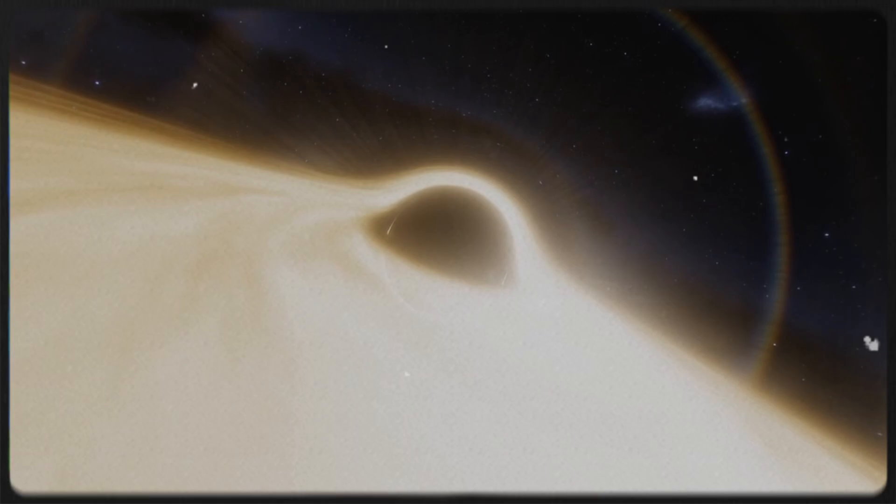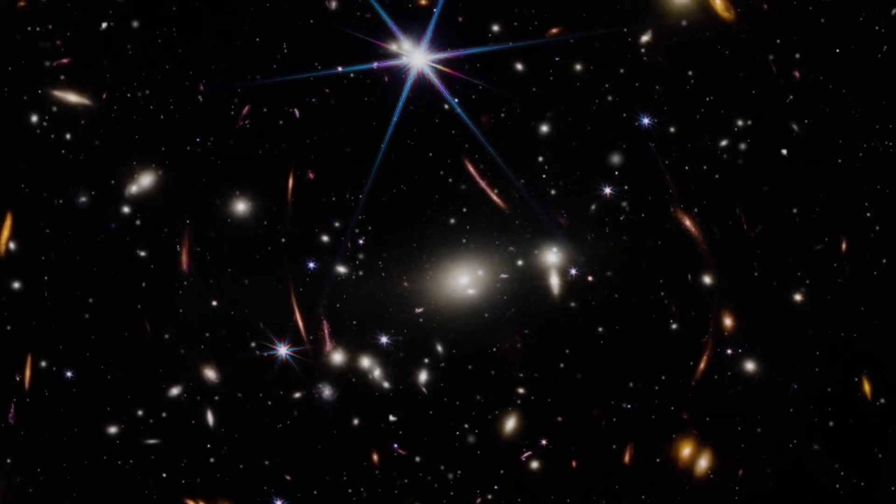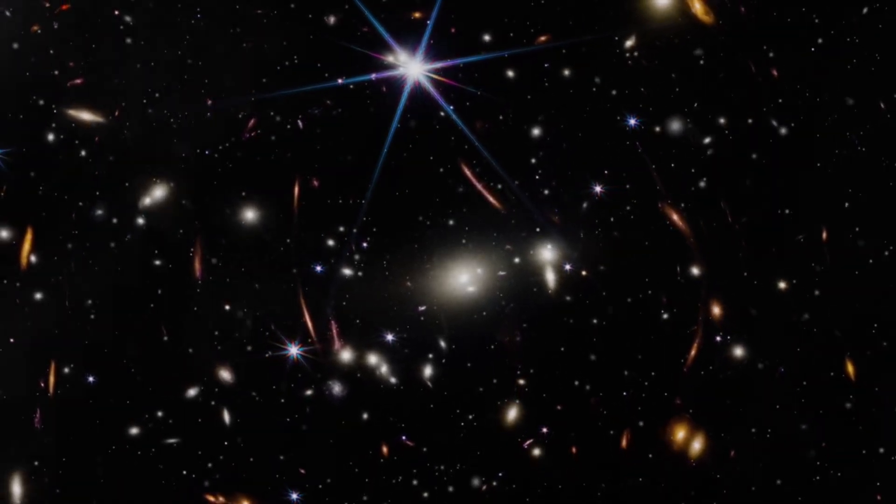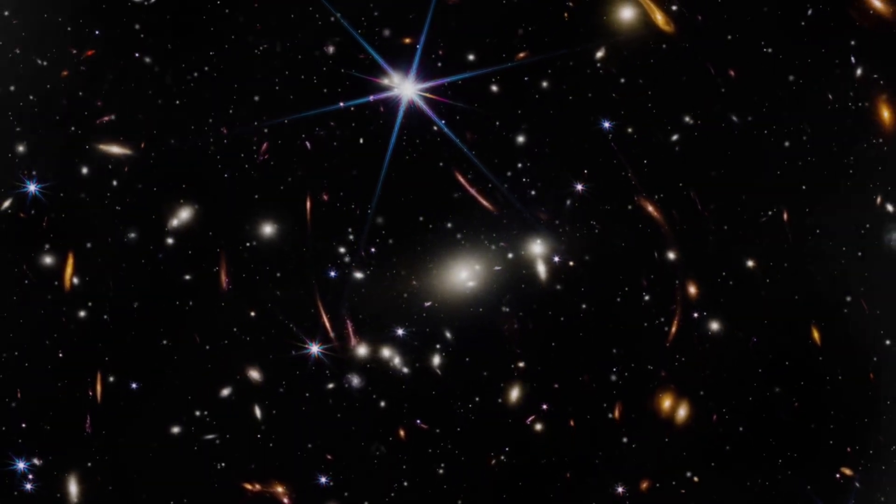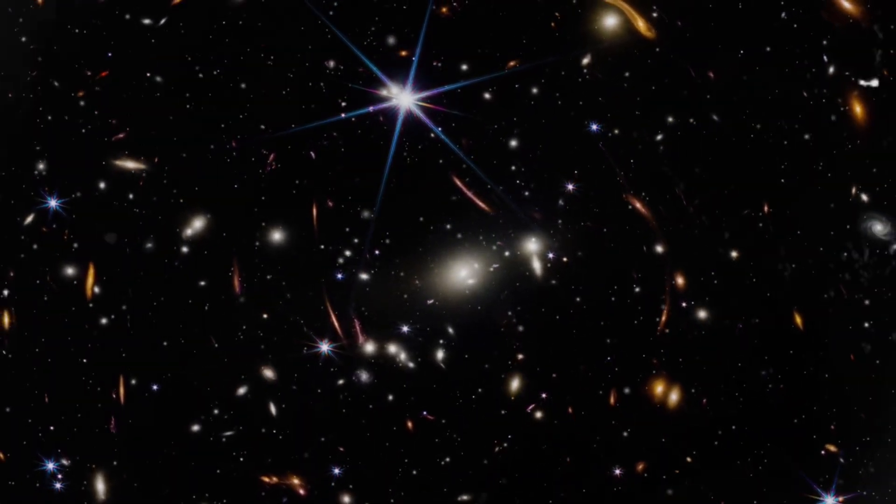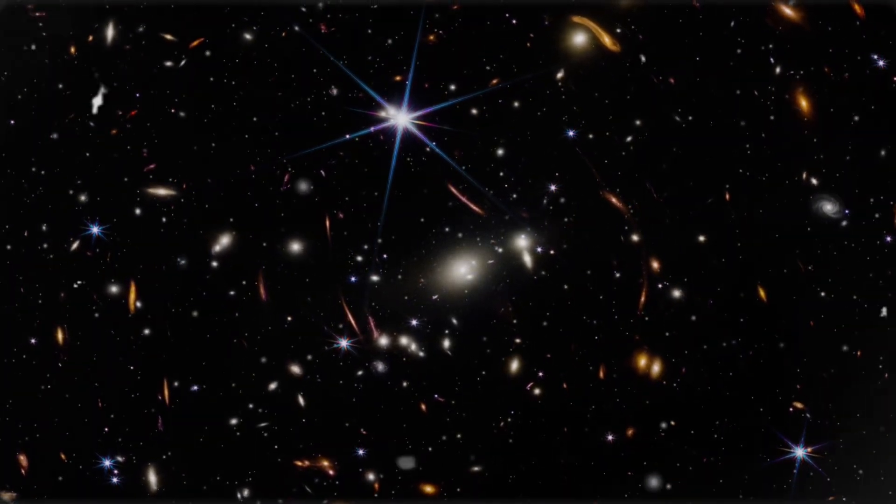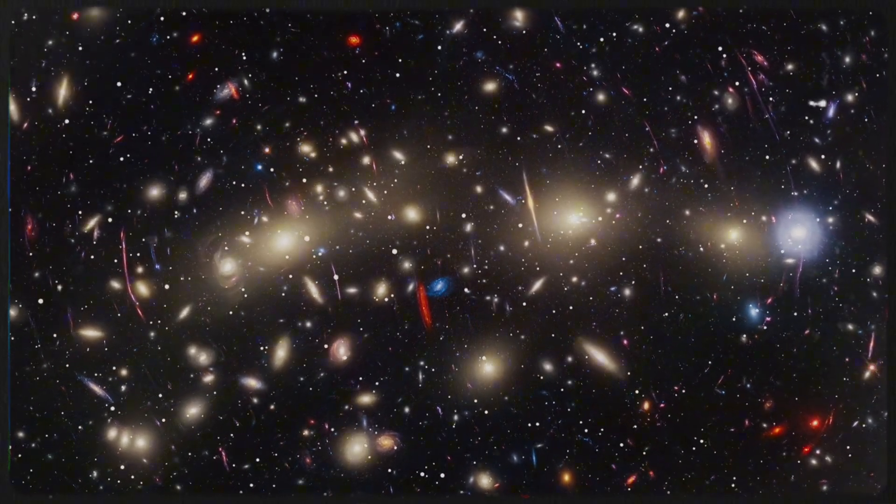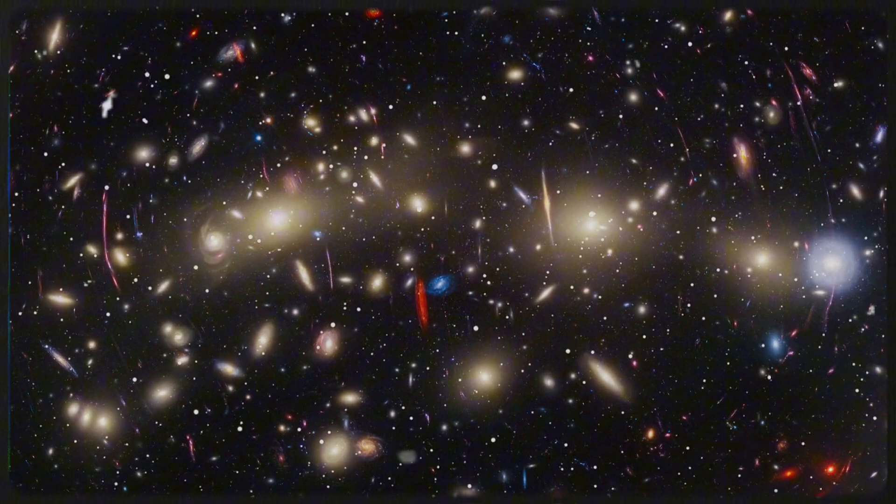But the surprises don't end there. In addition to CS 1019, the telescope also identified two more rogue black holes within galaxies CS 2782 and CS 746. These cosmic giants appeared about a billion years after the Big Bang, each weighing around 10 million times the mass of the Sun. They are part of a larger group of 11 galaxies that formed just a few hundred million years after the universe's birth.